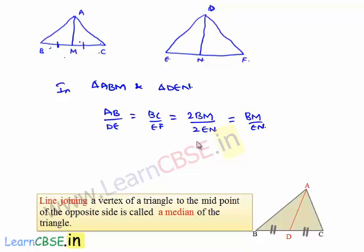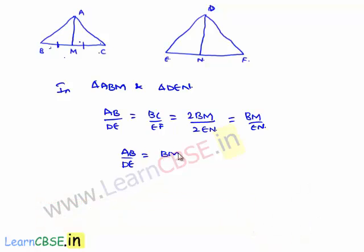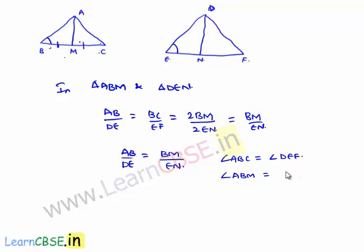From this we can write AB/DE = BM/EN. Also, since triangle ABC is similar to triangle DEF, we can say angle ABM equals angle DEN, which corresponds to angle ABC equaling angle DEF.